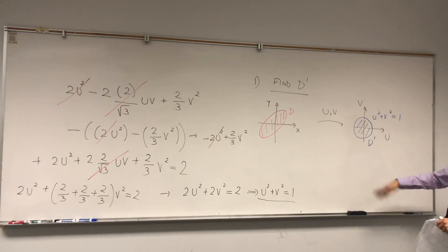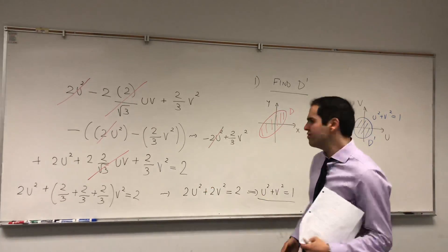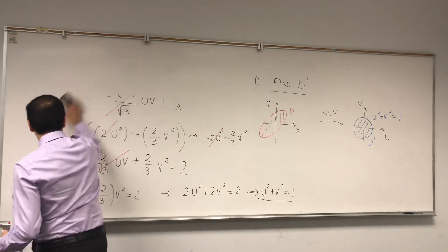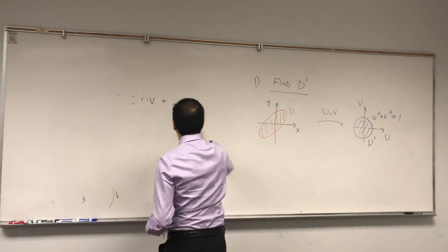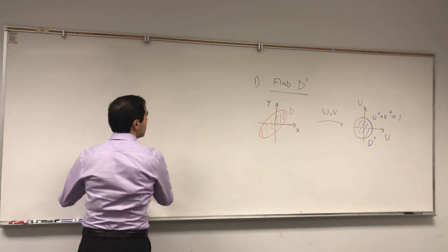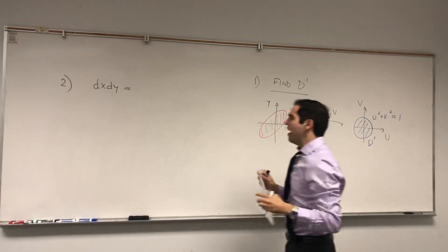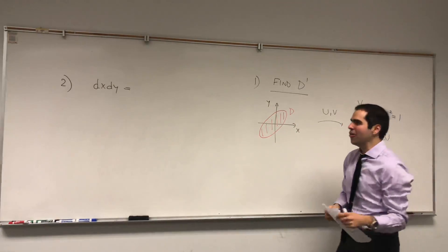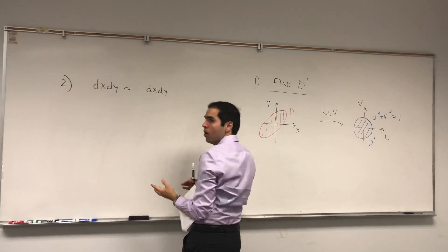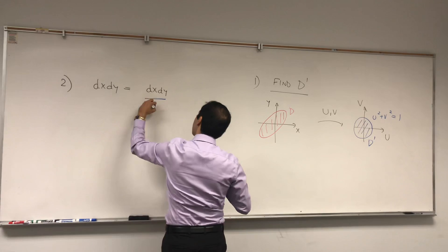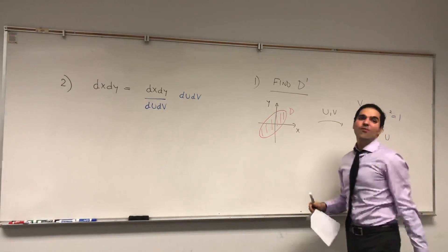Now, that's the first thing. The second thing is we need to figure out what this factor of dx dy becomes in terms of du dv. Let's write dx dy in terms of du dv. For this, we need this thing called a Jacobian. We start with dx dy but we have to multiply and divide by du dv.